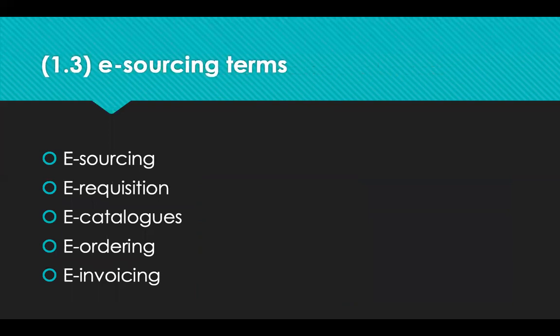Let's go through some e-sourcing terms. The 'e' at the start indicates these processes are done electronically using computer systems. E-sourcing uses electronic systems to help find and select suppliers — including small businesses and those in other parts of the world — and to manage procurement activities like the sending and receiving of tenders and quotes, making procurement and supply quicker and more efficient. E-requisitions are used to request an item from within your organisation, raised by selecting an item from an e-catalogue or entering text into the procurement system to explain what you're looking to buy.